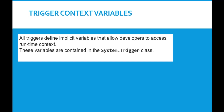Hello guys, this is Deepika from myTutorialRack.com. In this tutorial we will talk about the trigger context variables. All triggers define some implicit variables which allow the developers to access the runtime context. These variables are contained in a system.Trigger class.